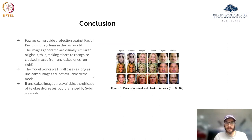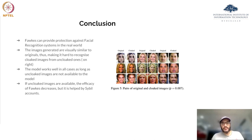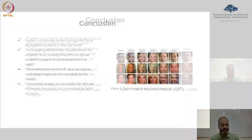To conclude: FAWKES can provide protection against facial recognition systems in the real world. The images generated are visually similar to originals, making it hard to recognize which images have been cloaked. The model works well unless some uncloaked images are available to it, but the authors also present Sybil accounts as an alternate way to protect your privacy even if uncloaked images are available to the web crawler.